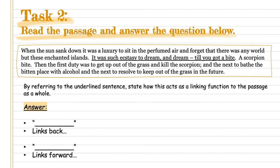Task two says: read the passage and answer the question below. The question says: 'by referring to the underlying sentence, state how this acts as a linking function to the passage as a whole.' The passage says: 'When the sun sank down, it was a luxury to sit in its perfumed air and forget that there was any world but these enchanted islands. It was such ecstasy to dream and dream — till you got a bite, a scorpion bite. Then the first duty was to get up out of the grass and kill the scorpion, and the next to bathe in the bitten place with alcohol, and then to resolve to keep out of the grass in future.' Notice there's a natural break — a dash — use that as an indication to split the two sentences into one linking back and one linking forward.